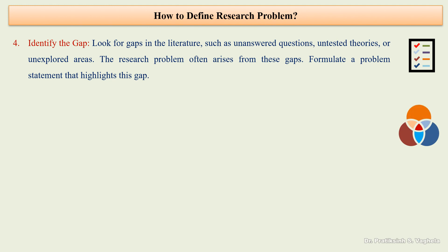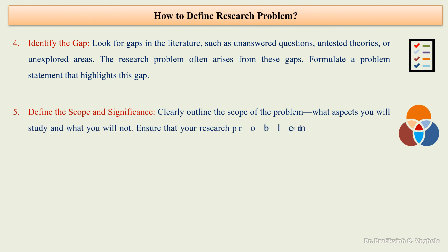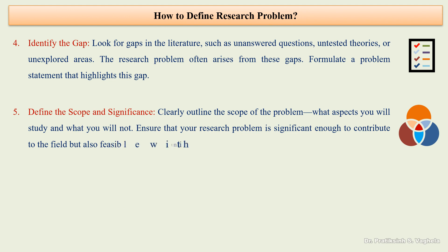The fifth step is to define the scope and significance. Clearly outline the scope of the problem — what aspects you will study and what you will not. Ensure that your research problem is significant enough to contribute to the field, but also feasible within the time and resource constraints of your research.